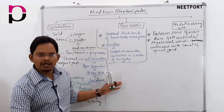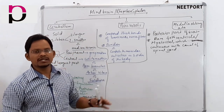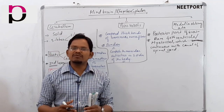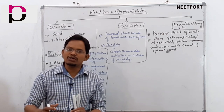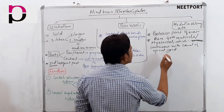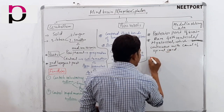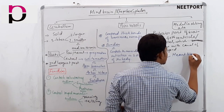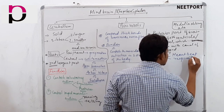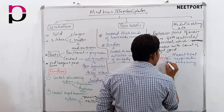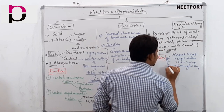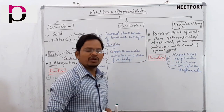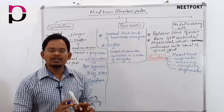Medulla oblongata is the posterior-most part of the brain, which is basically responsible for various involuntary actions. The involuntary functions controlled by medulla oblongata include heartbeat, respiration, sneezing, coughing, urination, and defecation. All these involuntary functions are controlled by the medulla oblongata.